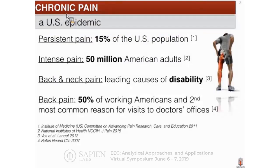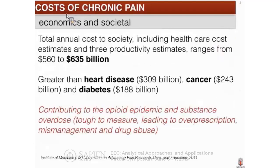Chronic pain is an epidemic in the United States — I'm sure it is also a significant healthcare issue in other countries. It affects approximately 15% of the US population. A big percentage of patients suffer from back and neck pain, which is a leading cause of disability with a huge economic and societal impact. In the context of the opioid epidemic, it is thought that the lack of accurate and objective diagnostics of pain are fueling opioid overdose, leading to overprescription, mismanagement, and drug abuse.